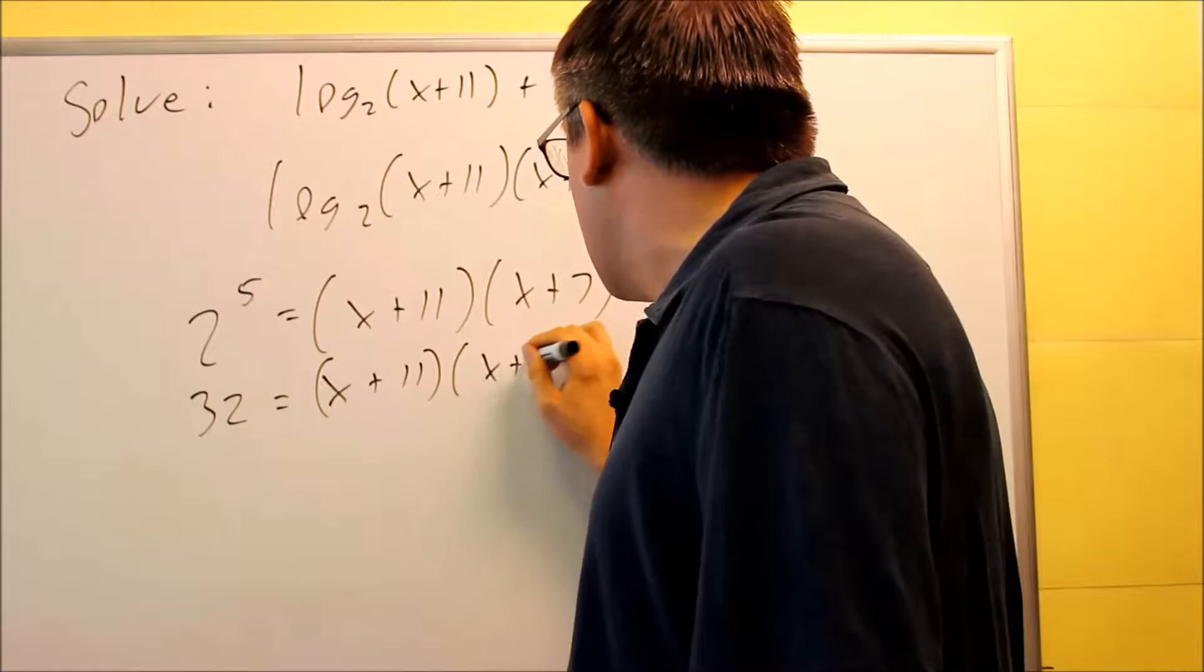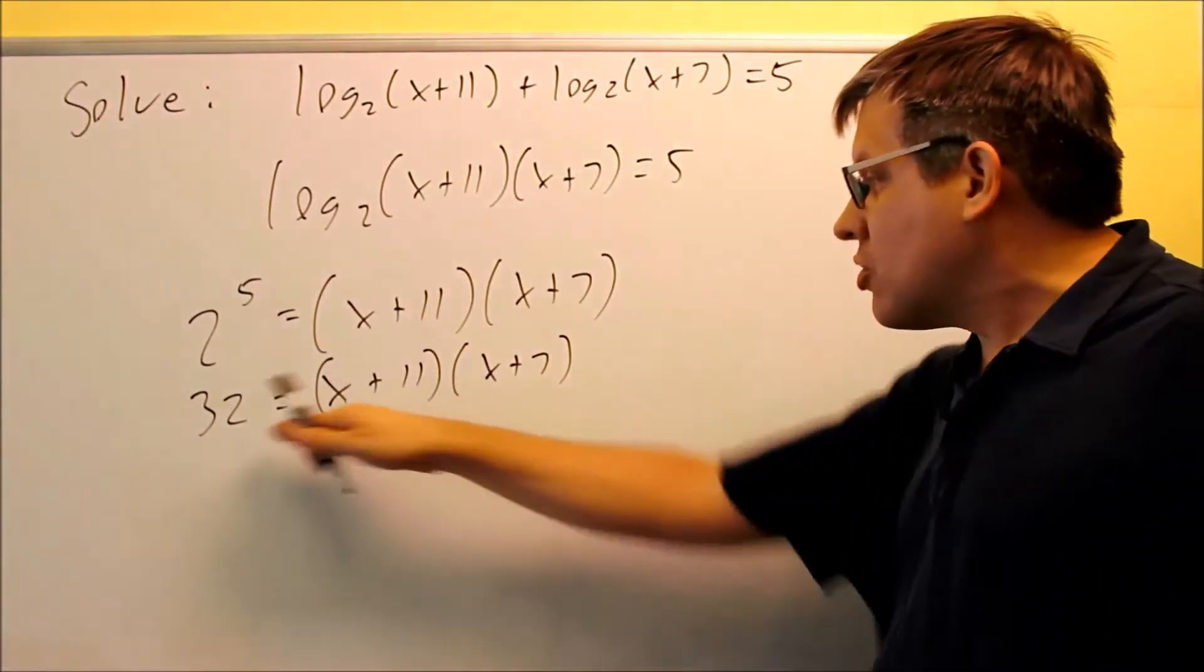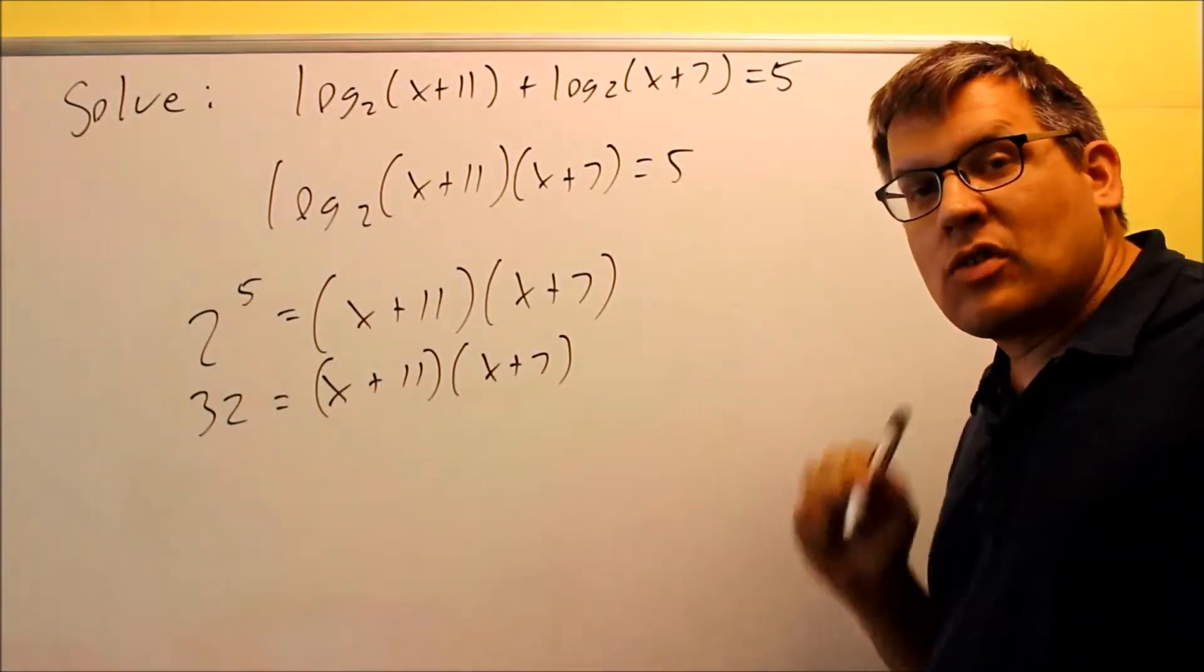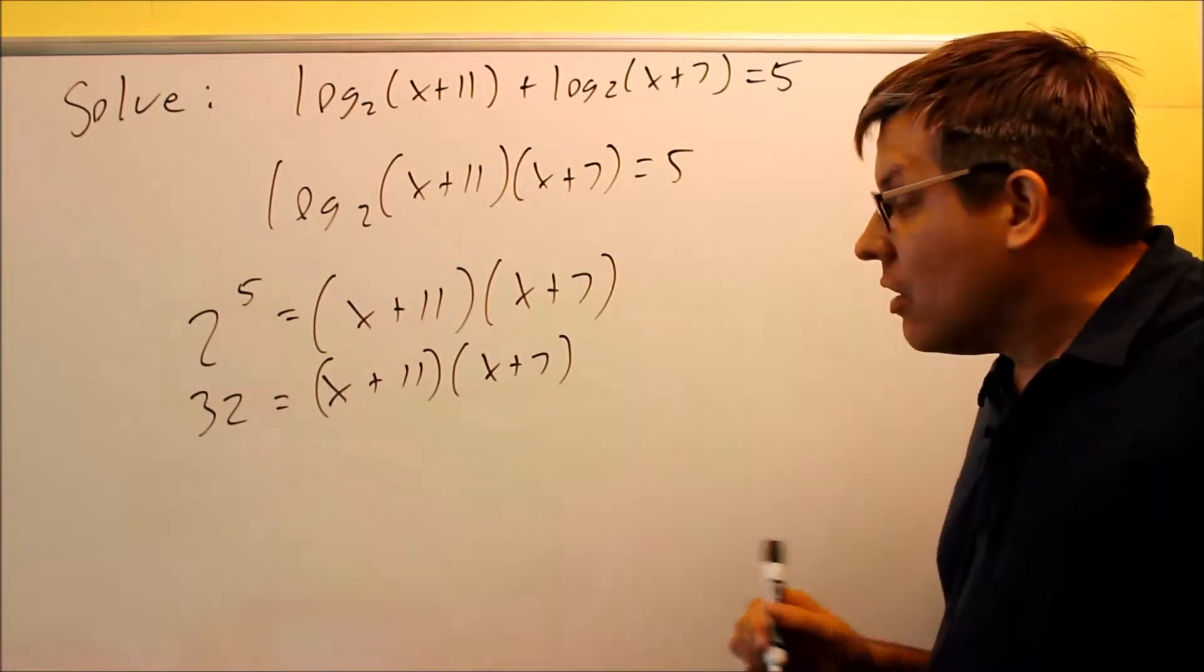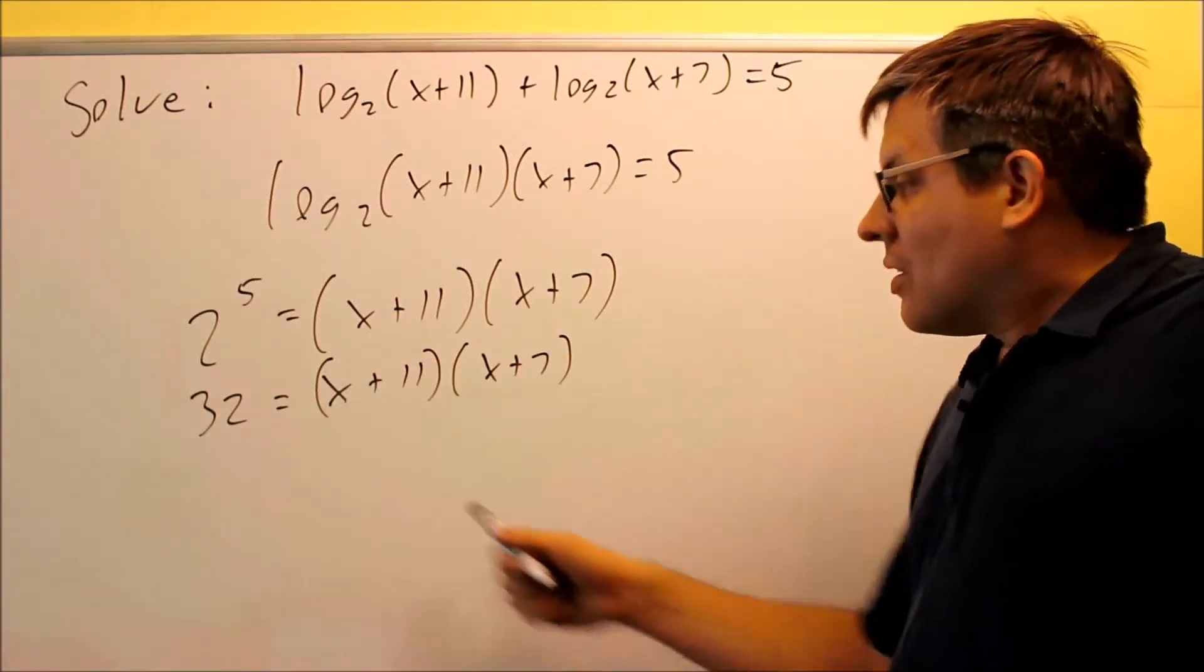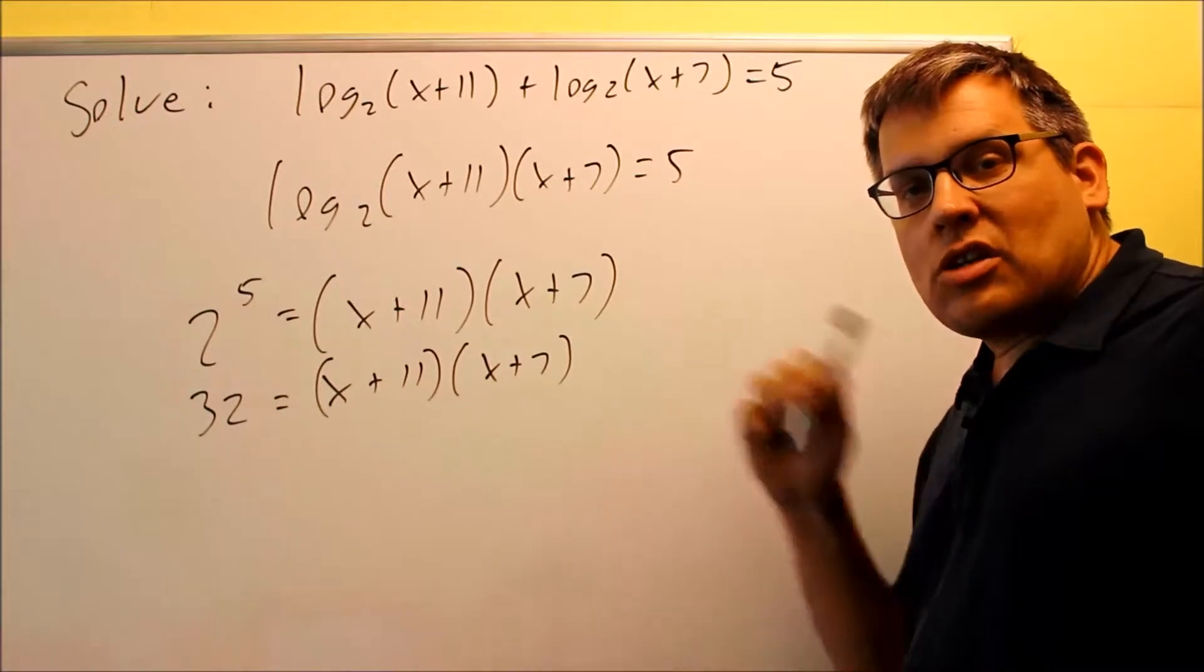We know that we're not allowed to take each one of these individually and set them equal to thirty-two. We have to have a zero on that side in order to do that. So I need to multiply this out, subtract the thirty-two from both sides, set it equal to zero.